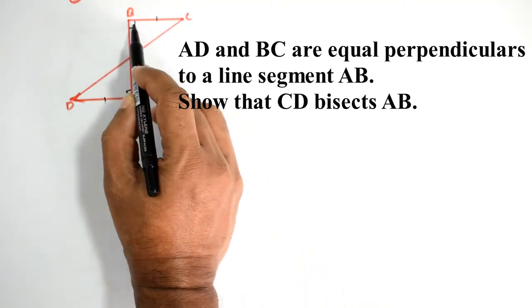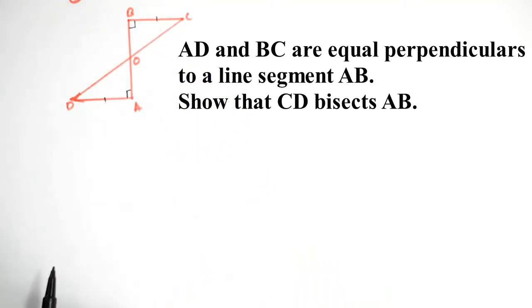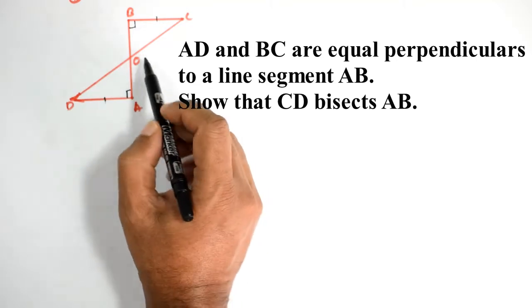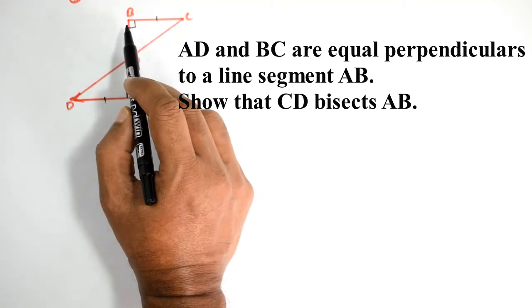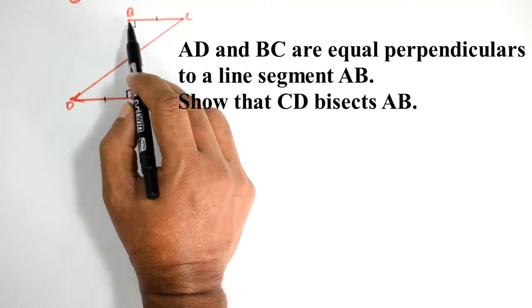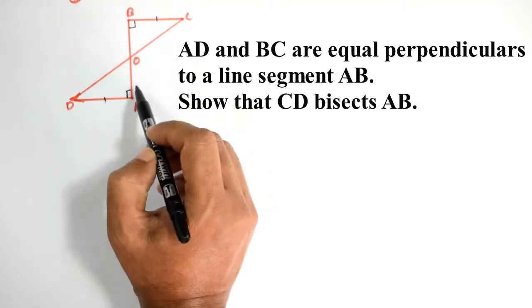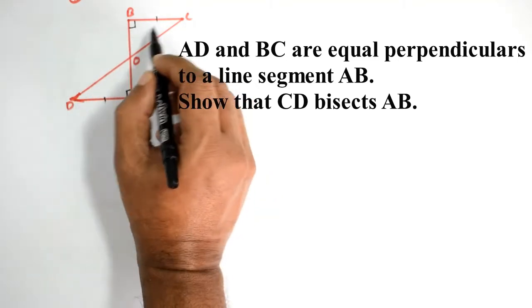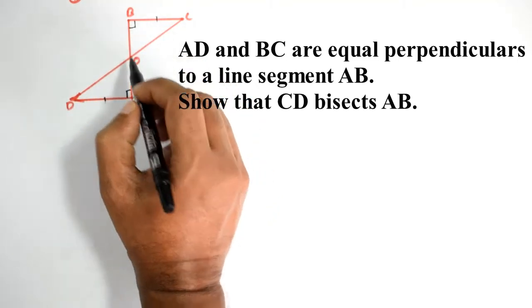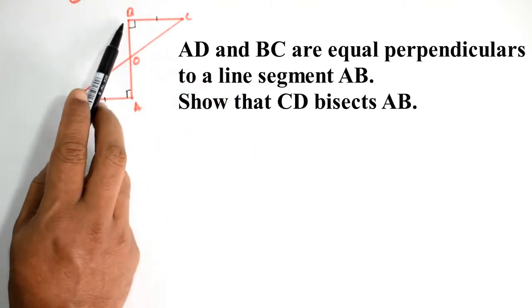This is equal. Now let's talk about this. In the congruency rule, we have to write this triangle: O, B, C and O, A, D. If we write this triangle, then O, B equals O, A.